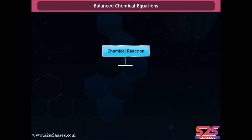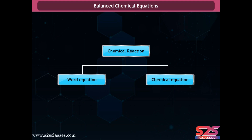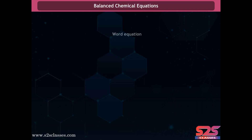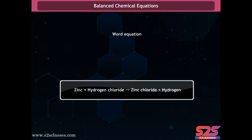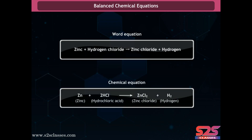Balanced chemical equations can be written in different ways, such as word equations and chemical equations. In a word equation: zinc plus hydrogen chloride gives zinc chloride plus hydrogen. In a chemical equation: Zn + 2HCl → ZnCl2 + H2.